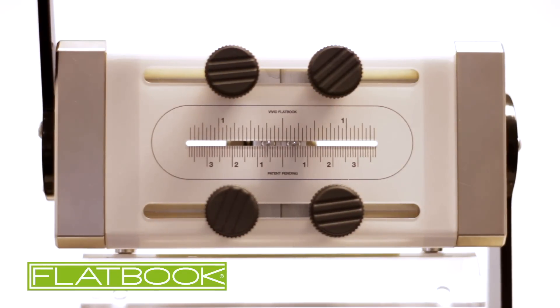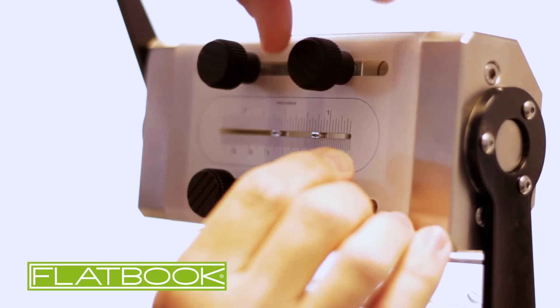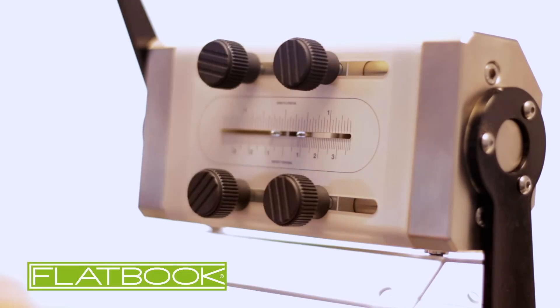The width of the spine of each book can be individually adjusted using the Flatbook's controls. Simply select and move the dials to choose the spine width required.